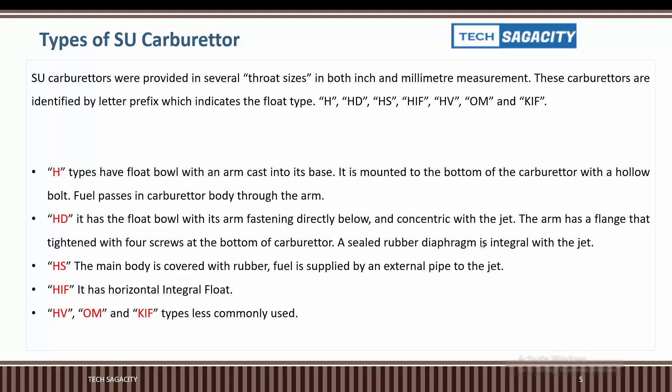The float ball has an arm, and the base mounts below the carburetor. The float ball with its arm fastens directly below and concentric with the jet.